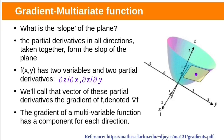What is the slope of this plane? Partial derivatives in all directions — in the x direction and in the y direction — taken together form the slope of this plane. Here function f has two variables, so we have two partial derivatives: partial derivative of z with respect to x, and partial derivative of z with respect to y. The vector of these partial derivatives is the gradient of f, denoted as ∇f. The gradient of a multivariate function has a component for each direction.